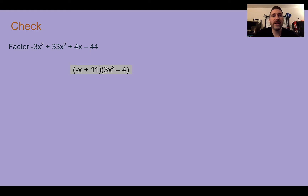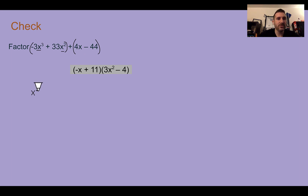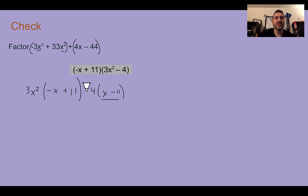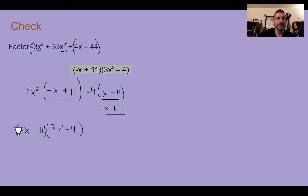Check your understanding: factor this polynomial. You should get negative x plus 11 as the GCF and 3x squared minus 4 as the other factor. Group the first two terms — they share an x squared and are both divisible by 3, leaving negative x plus 11. For the second group, factor out 4, leaving x minus 11. Since x minus 11 and negative x plus 11 are additive inverses, multiply by negative 1 to get negative x plus 11 in both groups. Regroup: the GCF is negative x plus 11, and the remaining factor is 3x squared minus 4.